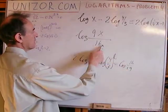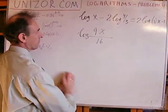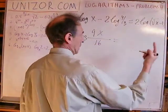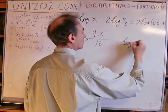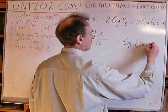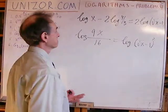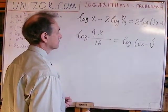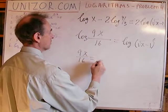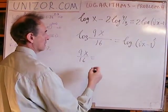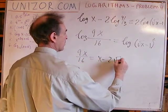So this is log of x divided by (4/3) squared, which is 16/9. On the right, we put the 2 inside the log: log of (square root of x minus 1) squared. Since two logs are equal, their arguments are equal: 9x over 16 equals x minus 2·square root of x plus 1.